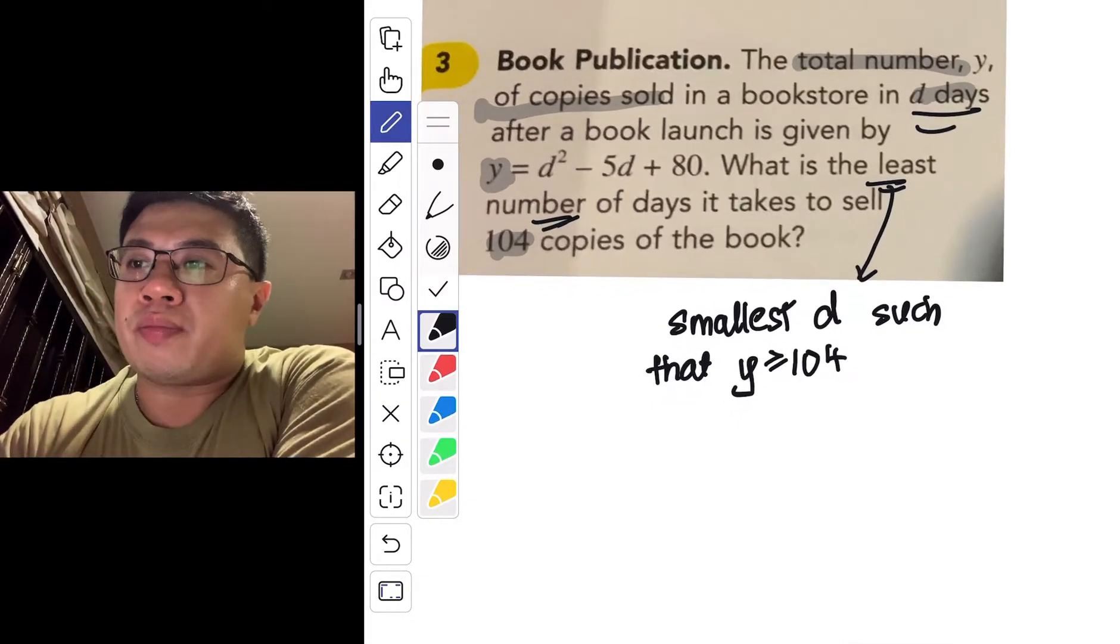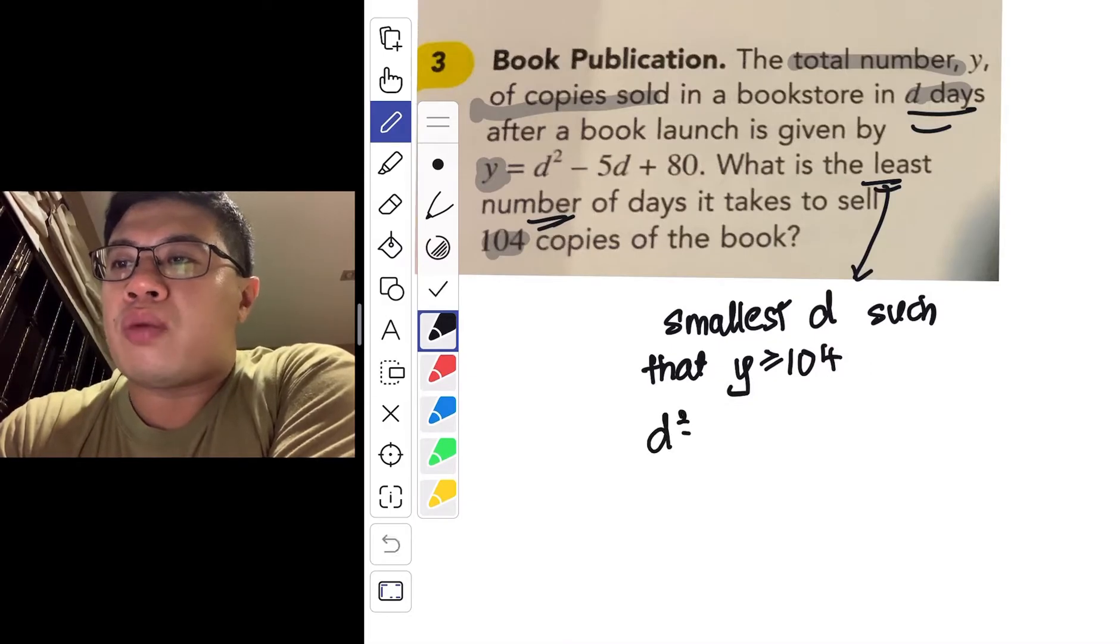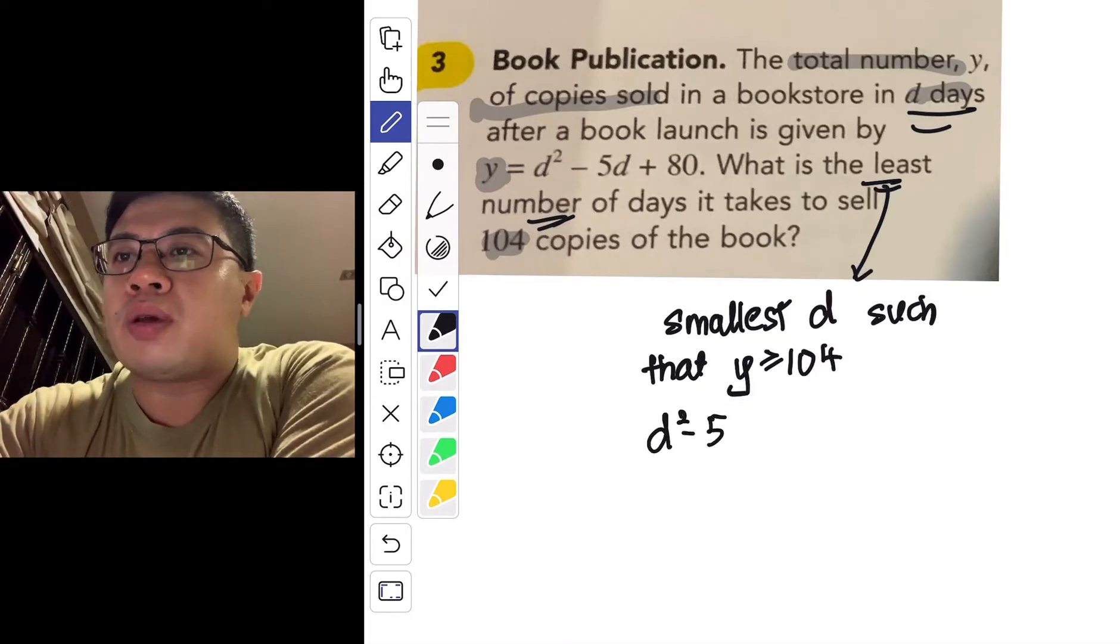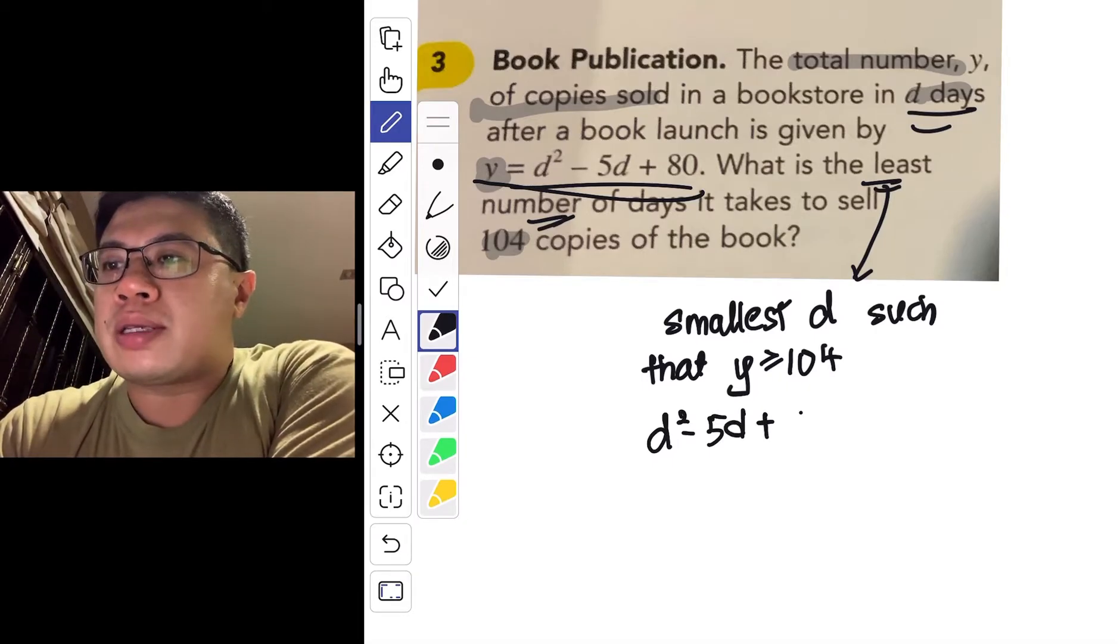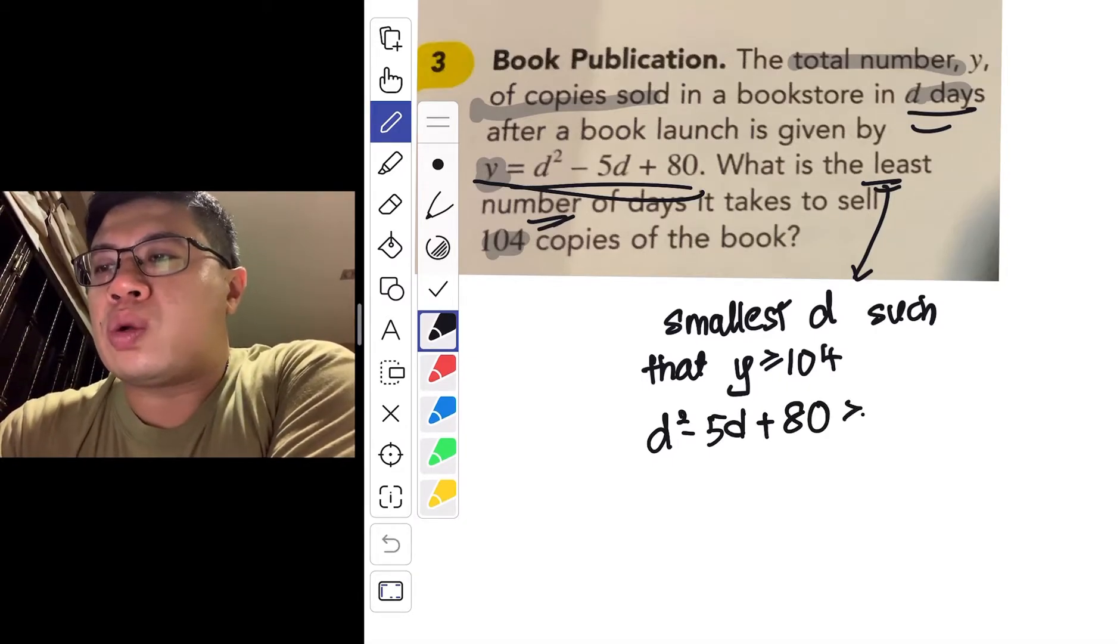Now we know that your y basically is a function of d. So it means that we are talking about d squared minus 5d plus 80 is more than equals to 104.